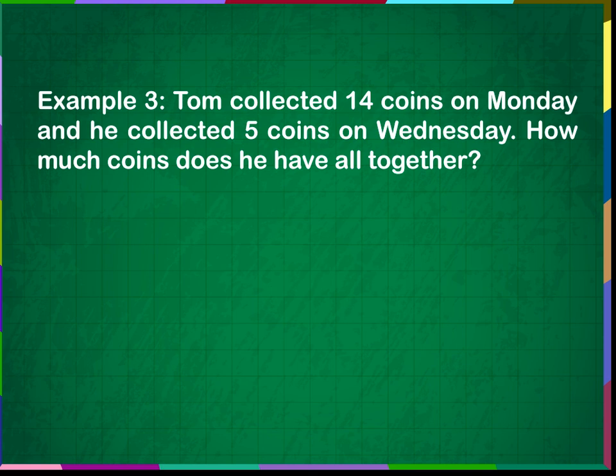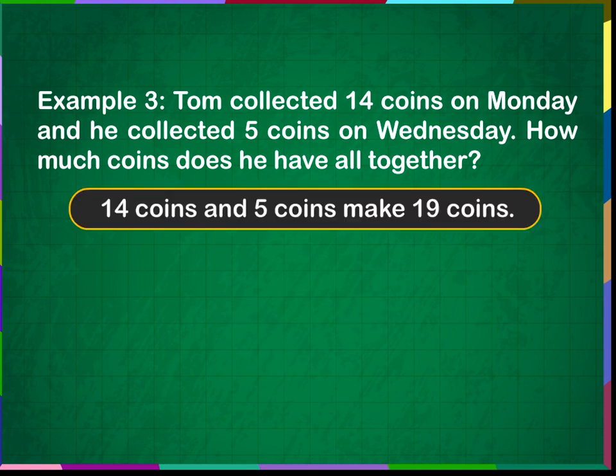Example 3: Tom collected fourteen coins on Monday and five coins on Wednesday. How many coins does he have altogether? Fourteen coins and five coins make nineteen coins. Fourteen plus five is equal to nineteen. Tom has nineteen coins altogether.